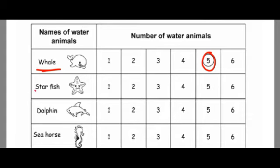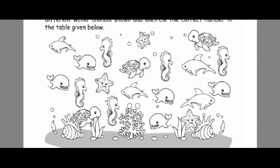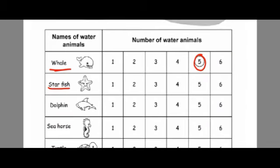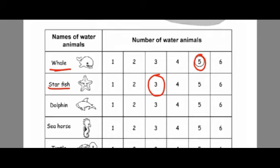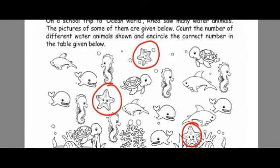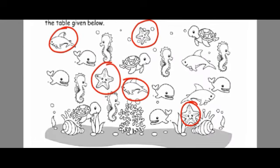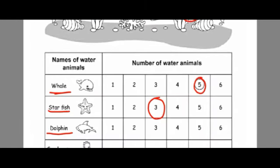Now we will count the starfish. Let's count — don't miss anyone: 1, 2, 3 — 3 starfish are there, so we will circle 3. Same way, now we need to count the dolphins. Let's see how many dolphins are there: 1, 2, 3, 4 — only 4 dolphins are there, so we can circle 4.